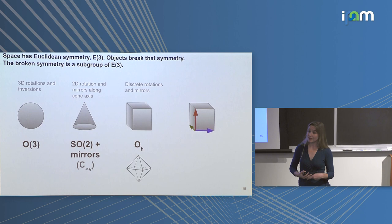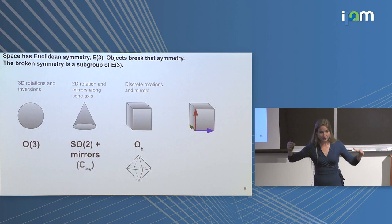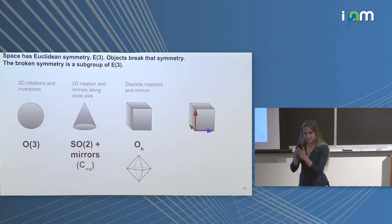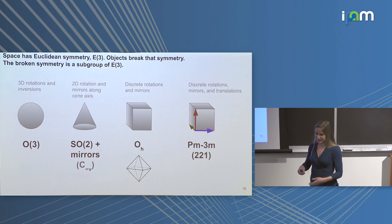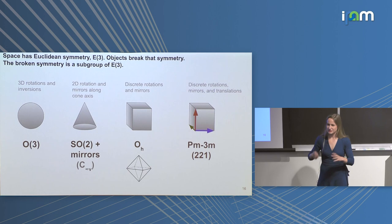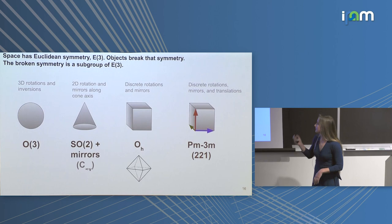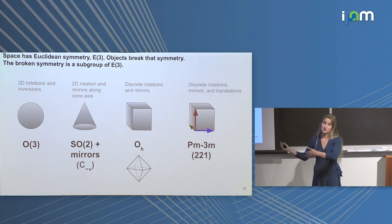Another way to break symmetry relevant to crystal structures is to keep certain translational symmetries. If I stack the cube everywhere in 3D space, I still can't do continuous translation or continuous rotations — I have discrete rotations, mirrors, and translations. This is called a space group. The specific space group with the octahedral point group is called Pm-3m, or space group 221. This is how you go from Euclidean symmetry to having your data break that symmetry into a lower space group.